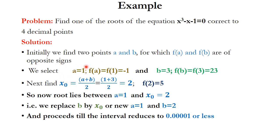We bisect the interval: x₀ = (1 + 3) / 2 = 2. Then we check f(2) = 8 - 2 - 1 = 5, which is positive. So the root lies between a = 1 and x₀ = 2. We replace b by x₀, so the new points become a = 1 and b = 2. This procedure continues until the interval is reduced to 0.0001 or less.